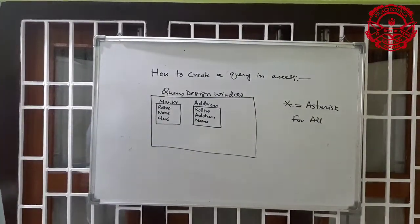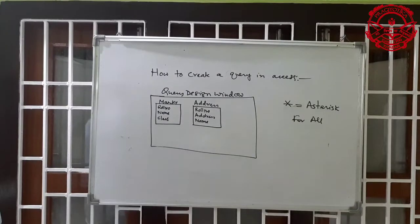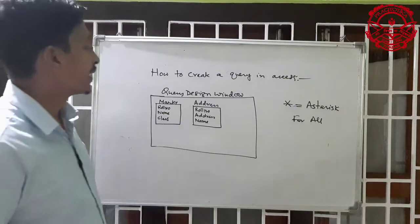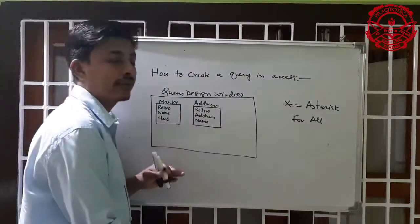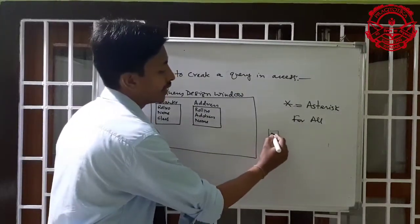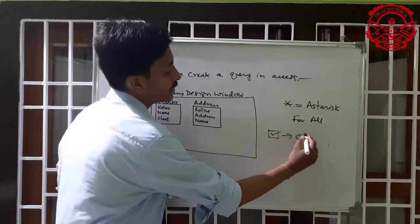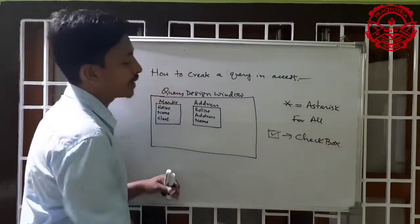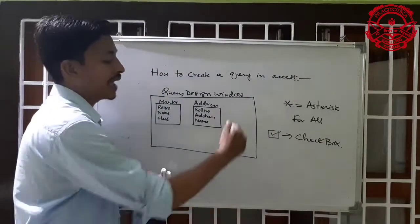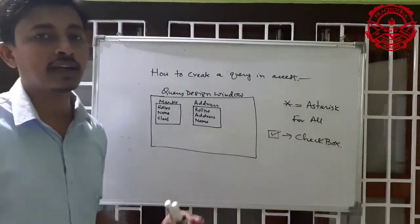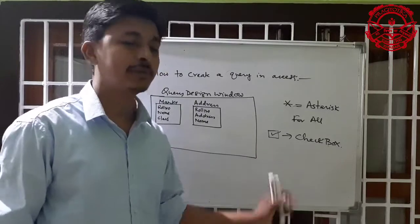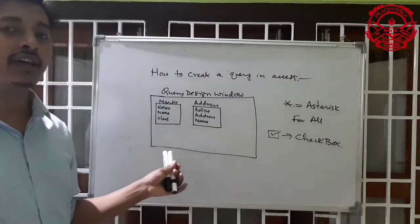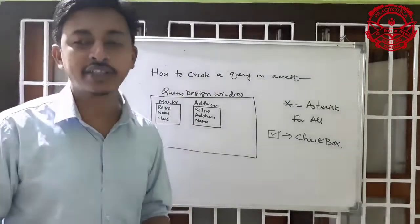To hide one or more fields, clear the show checkbox for those fields. This is called the show checkbox. If you don't want a field to appear in the query design grid, you can uncheck that checkbox.